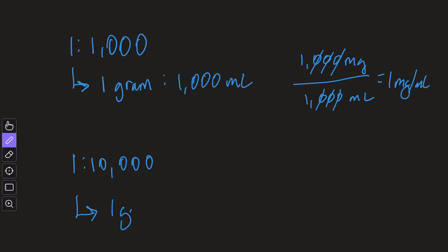Next, if we look at epinephrine 1 to 10,000, we have that same 1 gram in 10,000 milliliters of solution. And when we work this out, crossing out the zeros, we see that we have 0.1 milligrams per milliliter in the epinephrine 1 to 10,000 concentration.